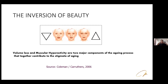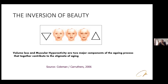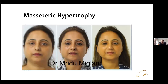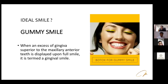Masseter hypertrophy accentuates the lower third of the face. In females, the biazygomatic width should always exceed the lower third width — creating the triangle of beauty. With age, volume loss in the middle third and masseter hypertrophy invert this triangle. We aim to restore it by injecting fillers into the mid-face and reducing masseter mass with botulinum toxin — a before/after example showed a well-defined jawline after lower third treatment.